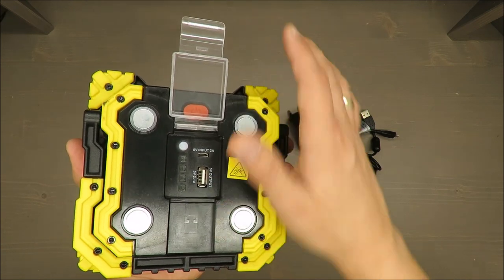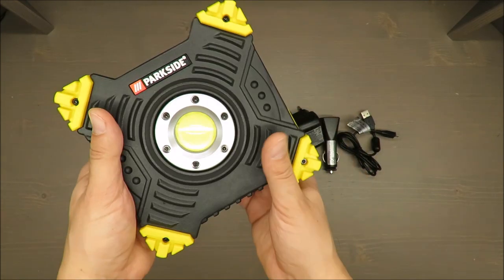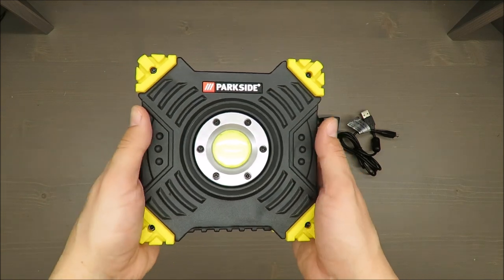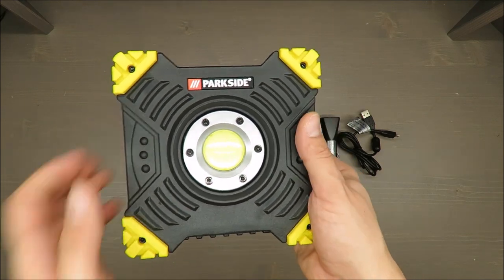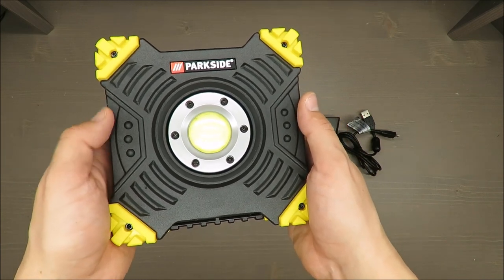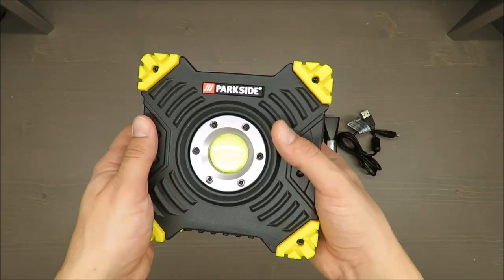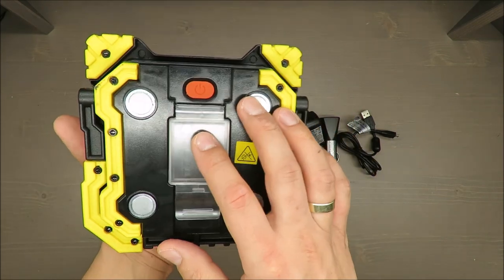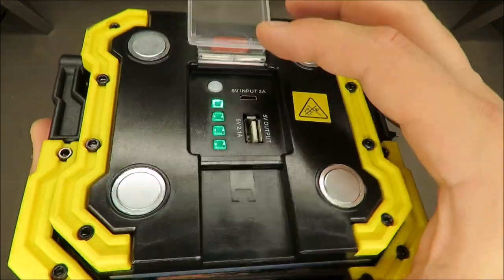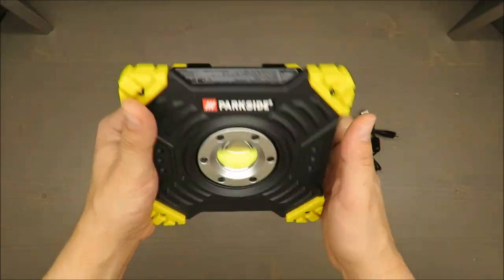It will work with maximum power at 1,500 lumens for more than three hours—three and a half to be precise. With eco mode, six and a half hours. For SOS they're not showing, and for the red light as well. You can always check how much power you have left.